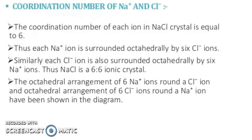Coordination number of Na⁺ and Cl⁻: the coordination number of each ion in sodium chloride crystal is equal to 6. Each Na⁺ ion is surrounded octahedrally by 6 Cl⁻ ions. Similarly, each Cl⁻ ion is also surrounded octahedrally by 6 Na⁺ ions. Thus, sodium chloride is a 6:6 ion crystal. The octahedral arrangement of 6 Na⁺ ions around a Cl⁻ ion and 6 Cl⁻ ions around a Na⁺ ion have been shown in the diagram.